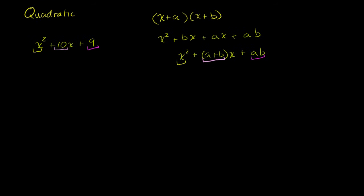So can we pattern match this? Is there some a and b where a plus b equals 10 and a times b equals 9? Let's think about the factors of 9 — assuming integer numbers. The factors of 9 are 1, 3, and 9. So it could be 3 and 3, or it could be 1 and 9.